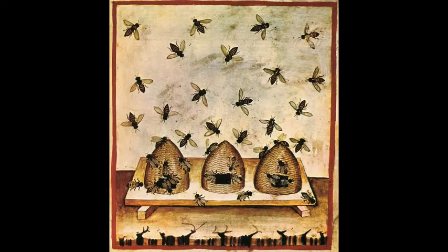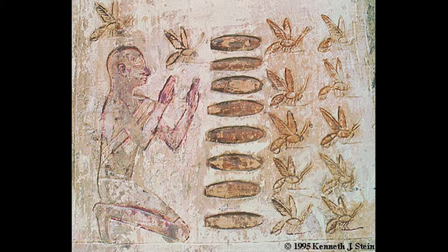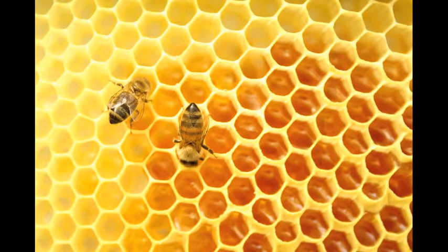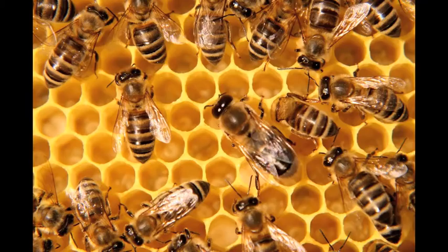A domesticated animal is an animal that is tame and kept as a pet or on a farm. Efforts to domesticate honeybees are found in Egyptian art from around 4,500 years ago. Two species of honeybees — A. mellifera and A. cerana indica — are maintained, fed, and transported by beekeepers. A. mellifera, the most common domesticated species, is usually referred to as either the European, Western, or common honeybee in different parts of the world.